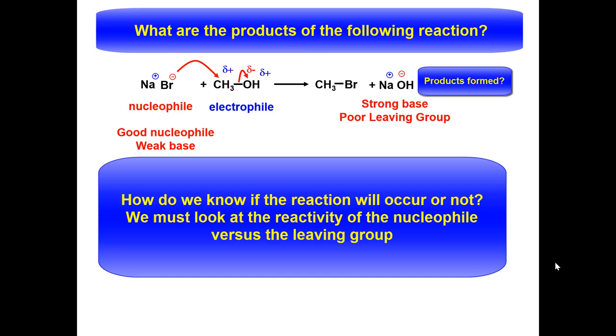The bromide ion is a good nucleophile, but a weak base. The leaving group is a hydroxide ion, is a very strong base, and also a good nucleophile.